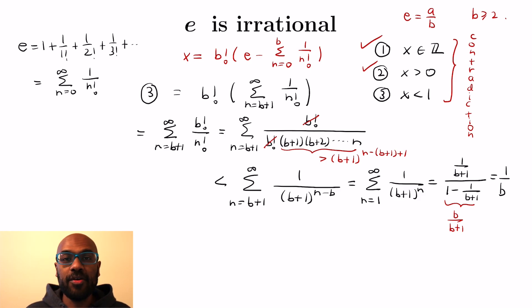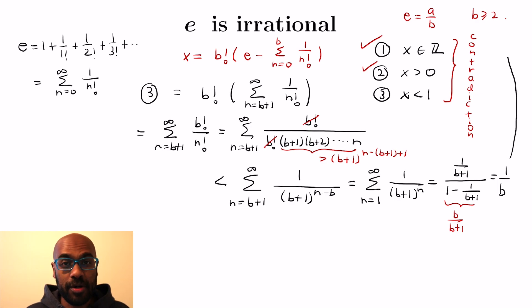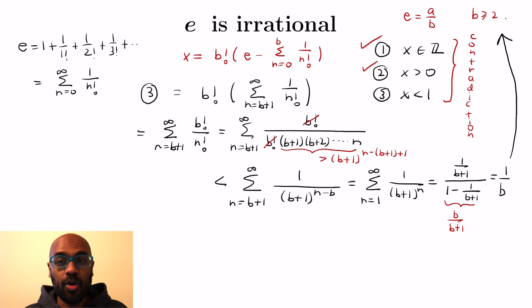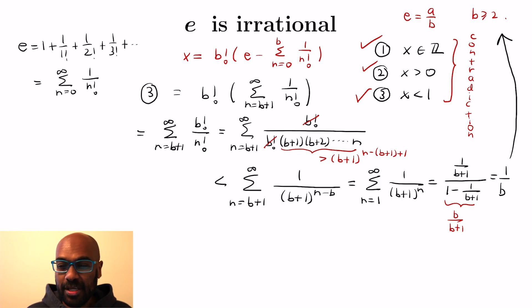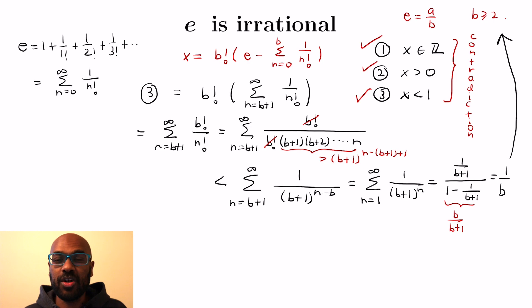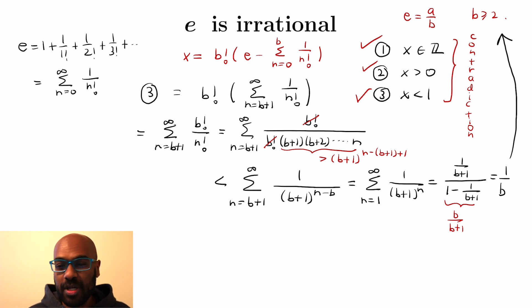Because the denominator b is at least 2 — since we already proved e is not an integer — 1 over b is at most one half, which is strictly less than 1. So x is less than 1. Altogether, x is an integer greater than 0 and less than 1, which is completely impossible. So there's no way our assumption that e was rational could be true in the first place.